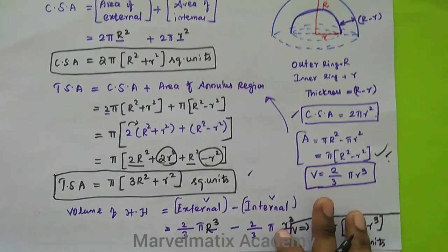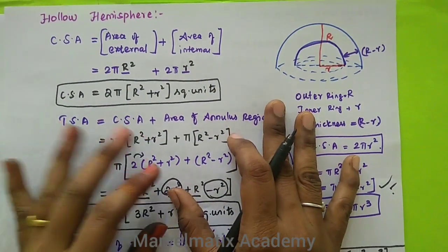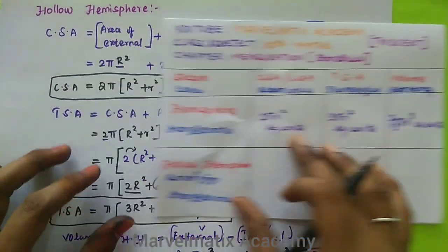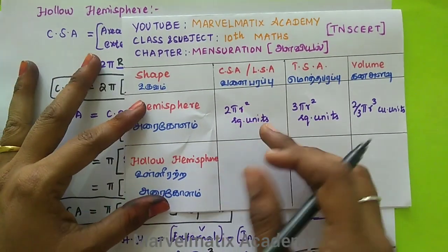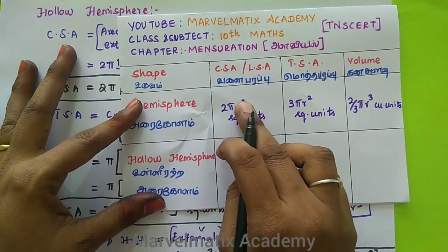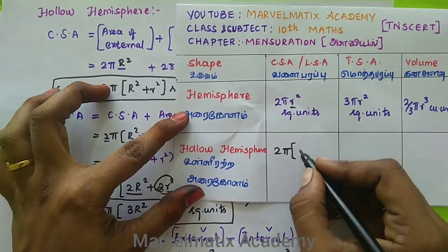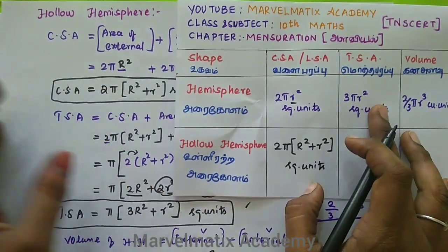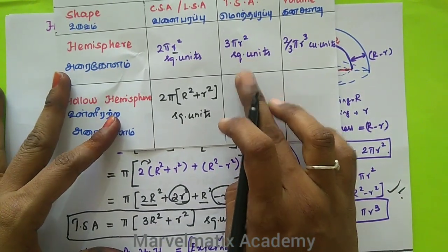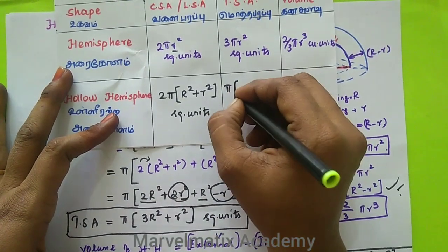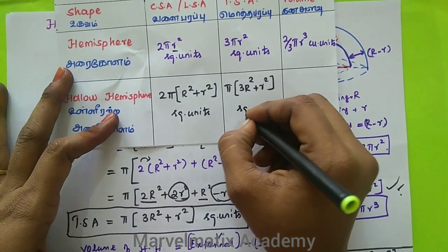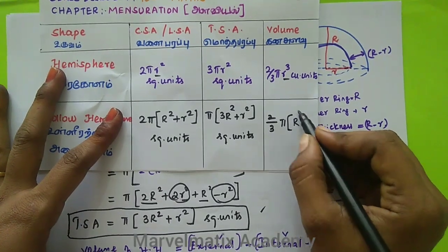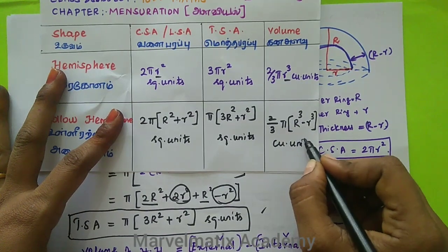So the hollow hemisphere formulas are: CSA equals 2π(R² + r²), TSA equals π(3R² + r²) square units, and volume equals 2/3π(R³ minus r³) cubic units. Here R is the outer radius and small r is the inner radius, and R minus r is the thickness.